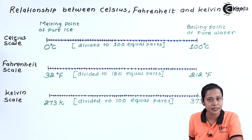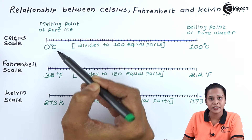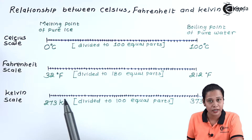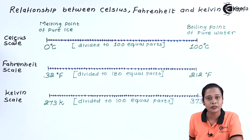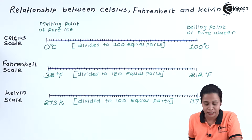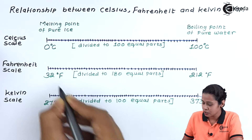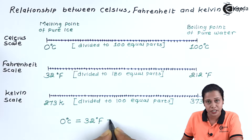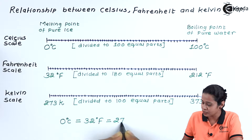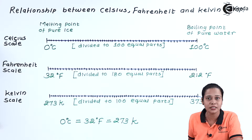If we compare all three scales, the melting point of pure ice is 0 degree Celsius on the Celsius scale, 32 degree Fahrenheit on the Fahrenheit scale, and 273 Kelvin on the Kelvin scale. So we can write: 0°C = 32°F = 273 K. This is the first relation we get from these three scales.